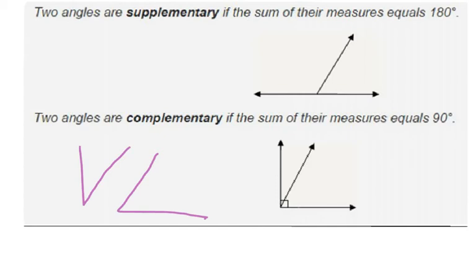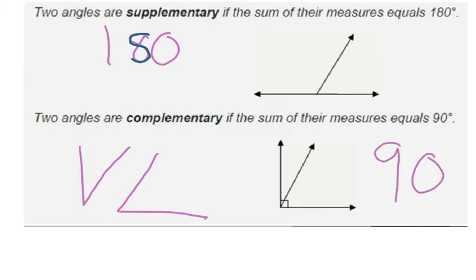One way to keep this straight: supplementary is 180 degrees, and there is a hidden S in the eight for supplementary. Complementary is 90 degrees, and there's a hidden C in the nine for complementary.